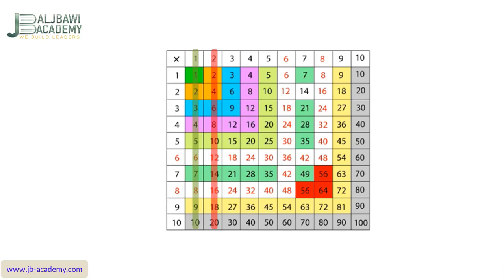We already highlighted the multiplication of 1 — it is finished. Now, 3 and 4 are the most difficult multiplication tables. If you understand and memorize them, you will find it easy to memorize all the multiplication tables. So I start with 3.